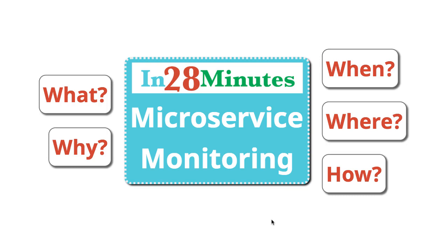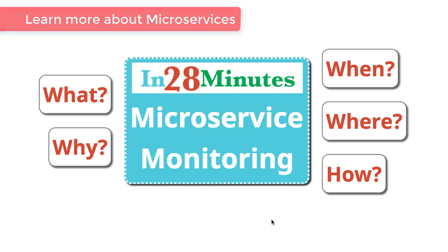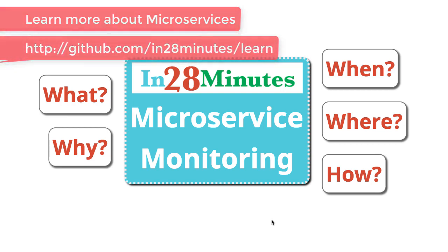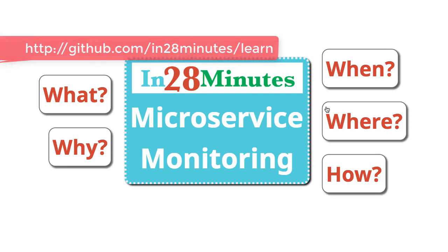The other place where it's important to know whether an application is down, or a specific instance is down, is when you are distributing load among them. One of the important things about microservices architecture is that each of these microservice instances should be disposable. As soon as you see that some error is happening on a specific microservice instance, you would dispose it off, and your infrastructure should be able to adjust to that and distribute the load among the other instances which are working fine.